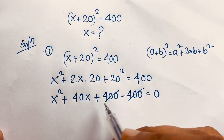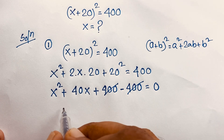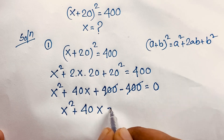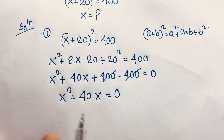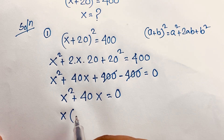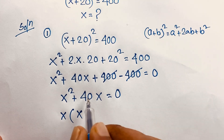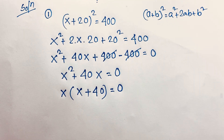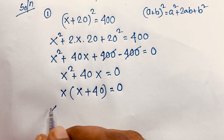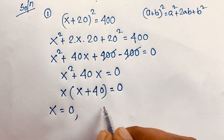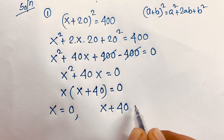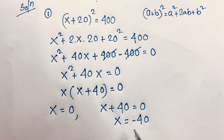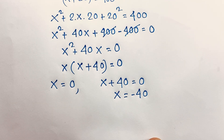The 400s cancel out — positive and negative — so we find x² + 40x = 0. Now x is common, so if I take x as a common factor: x(x + 40) = 0. This gives us two cases. First case: x = 0. Second case: x + 40 = 0, so x = −40. Our final answer is x = 0 or x = −40.